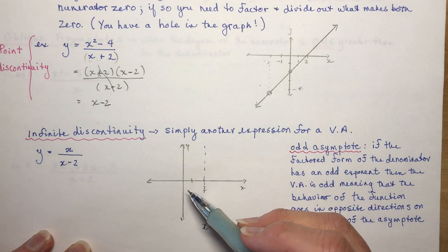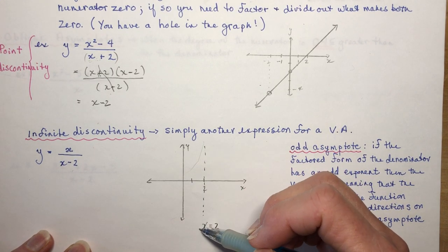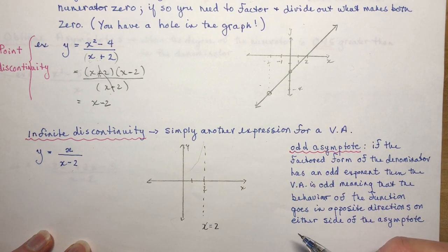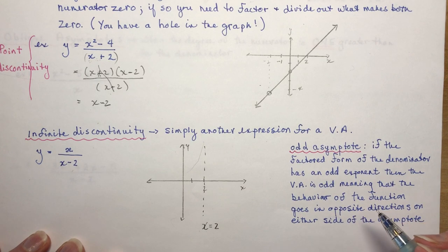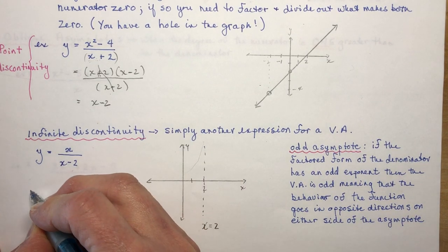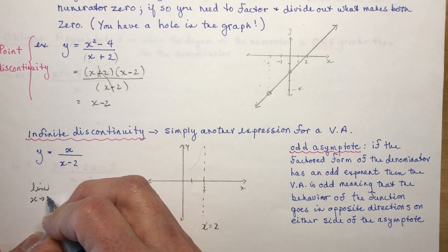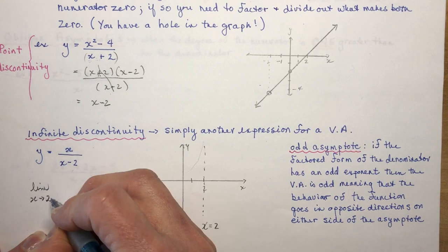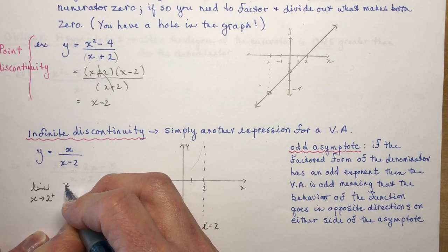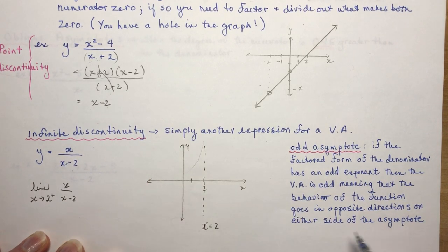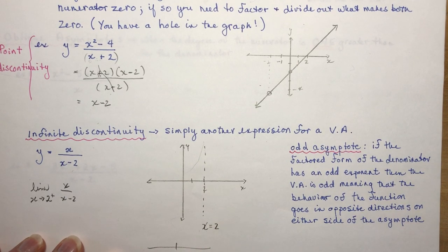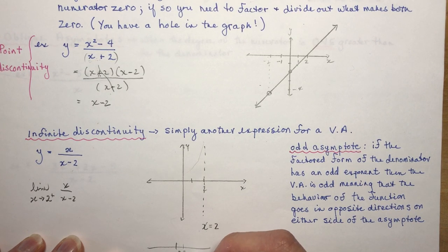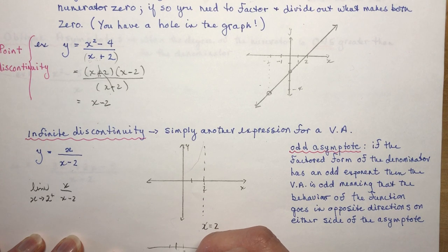I need to know whether the function is going up or down on each side of the asymptote, so I take a limit. As x approaches 2 from the right (plus sign means from the right), I can use a number like 3 or 2.001. From the left I'd use something like 1.99. You just need to know whether the value is positive or negative.